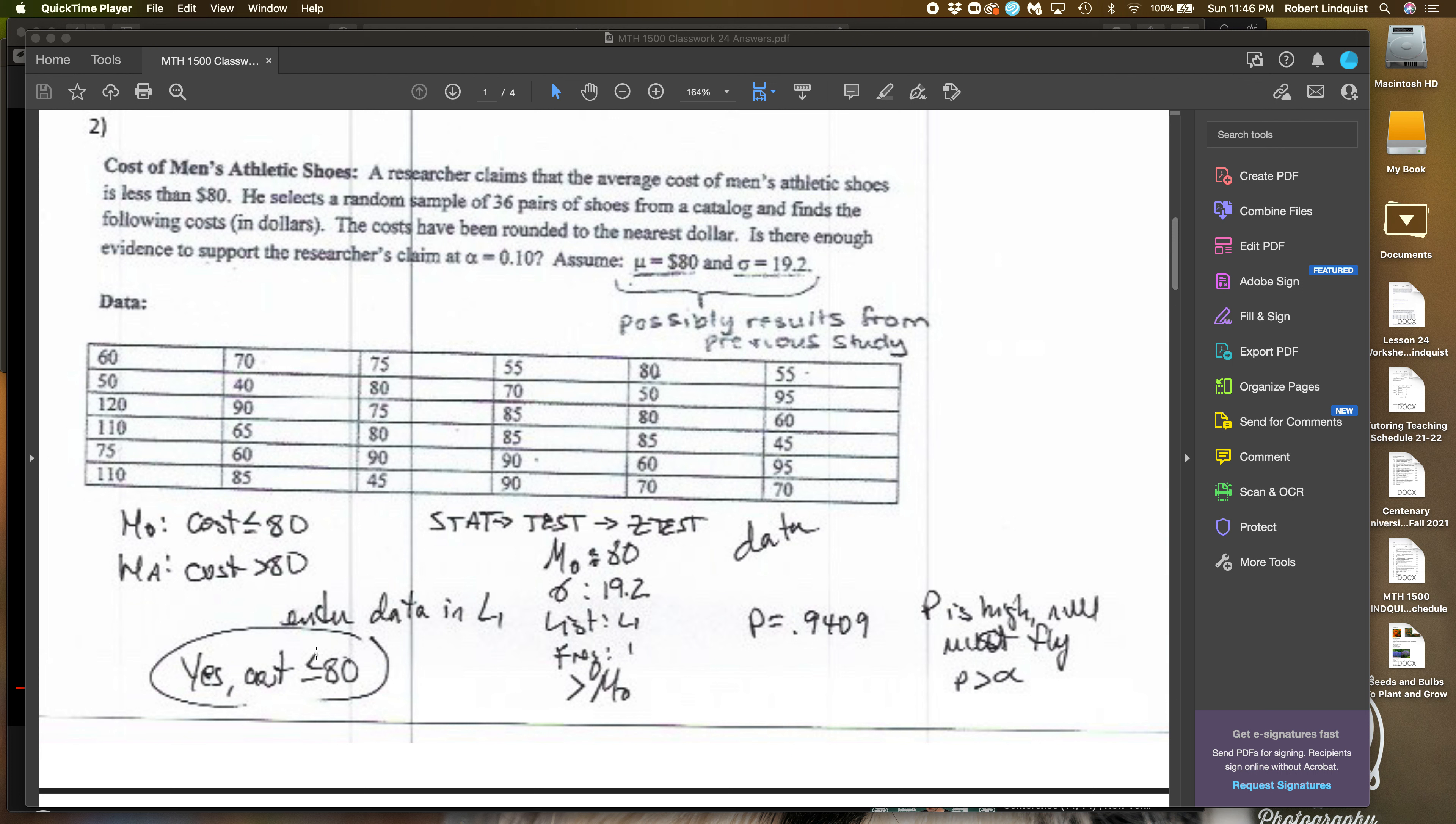Now, what can get a little consuming is these P values, and they're a little offsetting. But just keep relating them back to the null and the alternative, and P is high, null must fly.